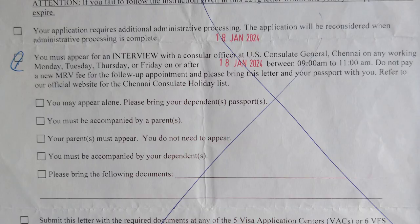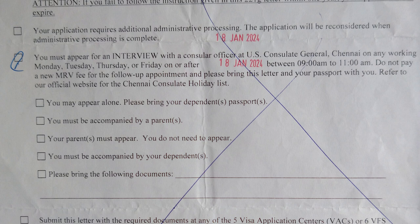Under the interview option, there are sub-points: you may appear alone and bring your dependent's passport; you must be accompanied by a parent (in the case of a minor); your parent must appear but you do not need to appear; or you must be accompanied by your dependents. The final sub-option is 'please bring the following documents,' with a blank space for the consular officer to fill in any special documents they need.